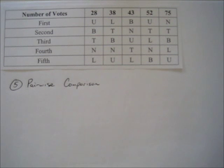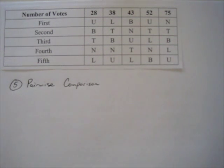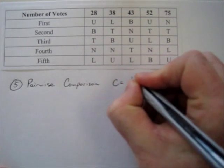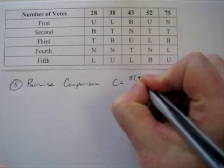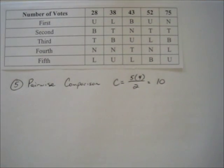The last problem on the first page, problem five, deals with the pairwise comparison method. First we determine how many comparisons we need to make. There are five candidates, and according to our formula, the number of comparisons is 5 times 4 divided by 2, which equals 10 comparisons.